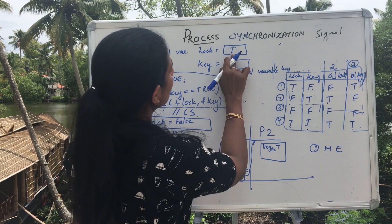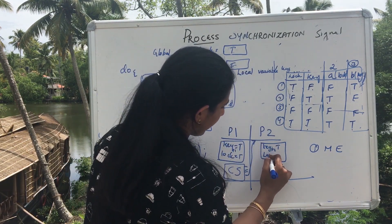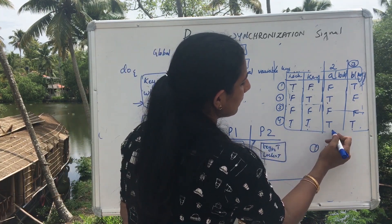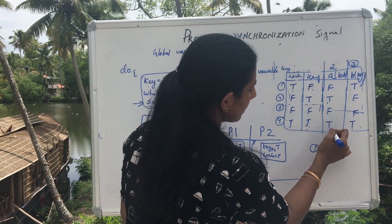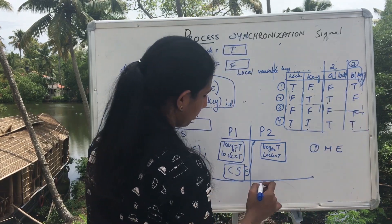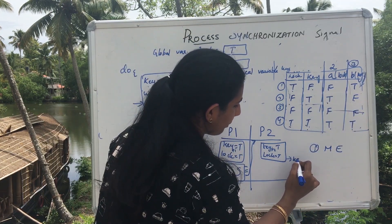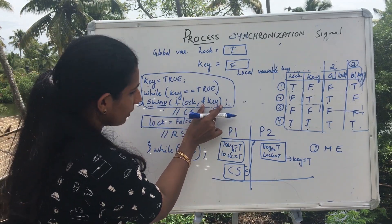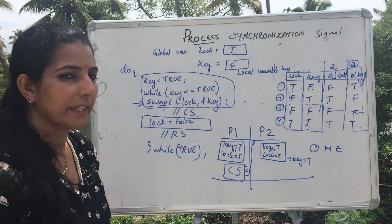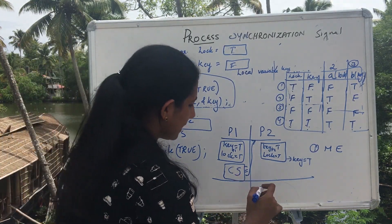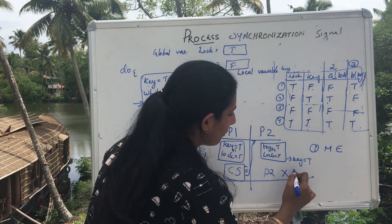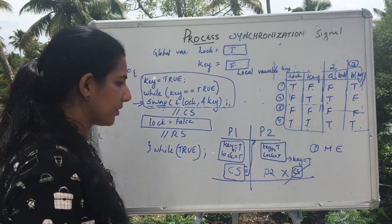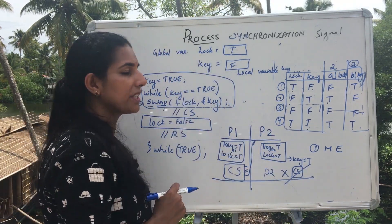The lock value is true. After the swap function, true and true returns lock equal to true and key equal to true. So the key remains true. Since key equals true, P2 is not allowed to enter the critical section. Thus P2 is blocked from entering the critical section and cannot enter it. Thus mutual exclusion is maintained and the first requirement is met.